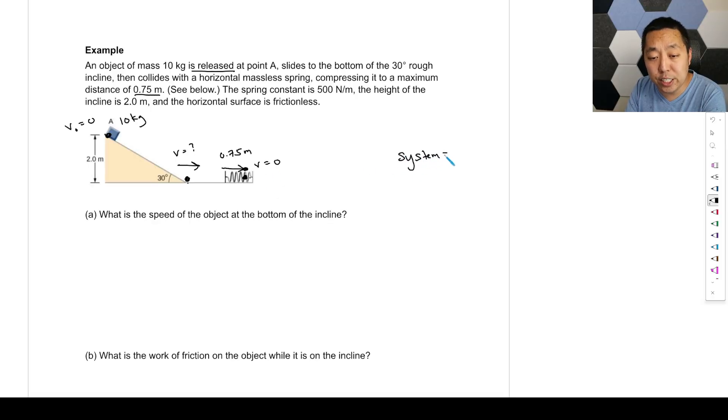So what's our system going to be? Well, because there's no change in height, we'll make the system the block plus the spring. You can include the earth, but there's no change in height, so it doesn't really matter because the height's going to be zero or would set the reference height h to zero, in which case in both cases, the gravitational potential energy would be zero. So it doesn't really matter if you include the earth or not.